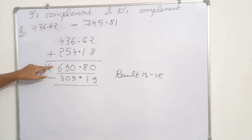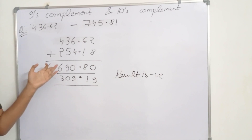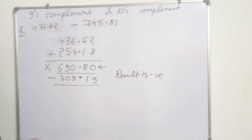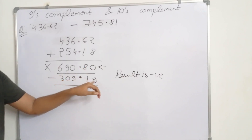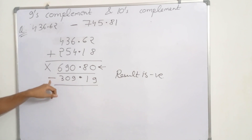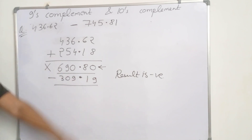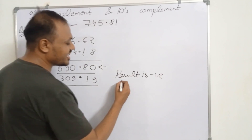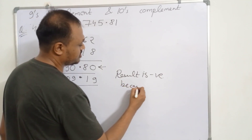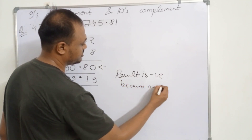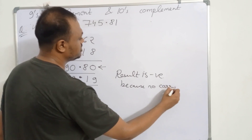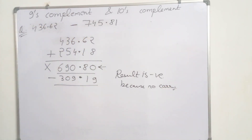If there is no carry, it means the result is negative, and we have to take the 9's complement of the result. By taking the 9's complement we got 309.19, and we add the minus sign because the result is negative. This is how we perform subtraction using the 9's complement method.